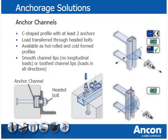Anchor channels are C-shaped profiles with headed anchors connected to the back of the channel. The channel is normally attached to the formwork so that the channel surface is flush with the concrete. During the concrete pour, the channel section is filled with a removable filler to prevent concrete intrusion. After the formwork is stripped, the filler is removed and headed bolts are installed in the channel to introduce loads. Anchor channels are available with hot-rolled and cold-formed profiles. Systems with plain lips allow loading in tension and shear perpendicular to the longitudinal axis only.